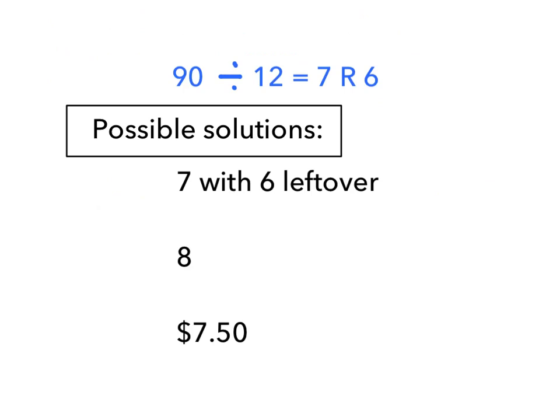As you can see, the equation 90 divided by 12 equals 7 remainder 6 has several possible solutions when you're interpreting story problems. In the previous three problems, we came up with these three solutions: 7 with 6 left over, 8, and $7.50.